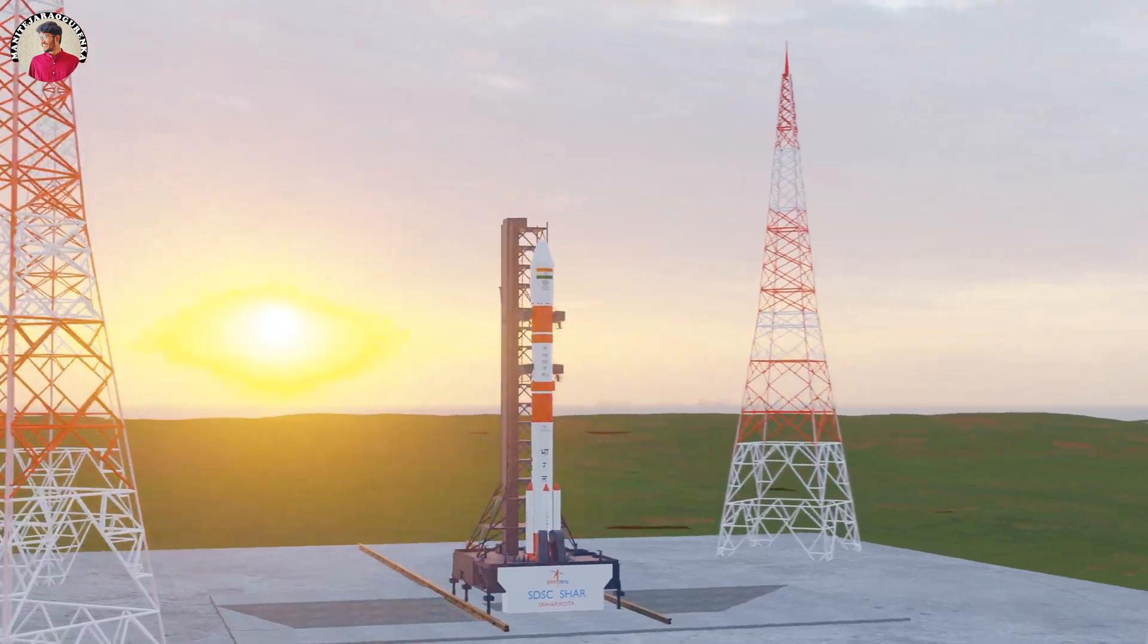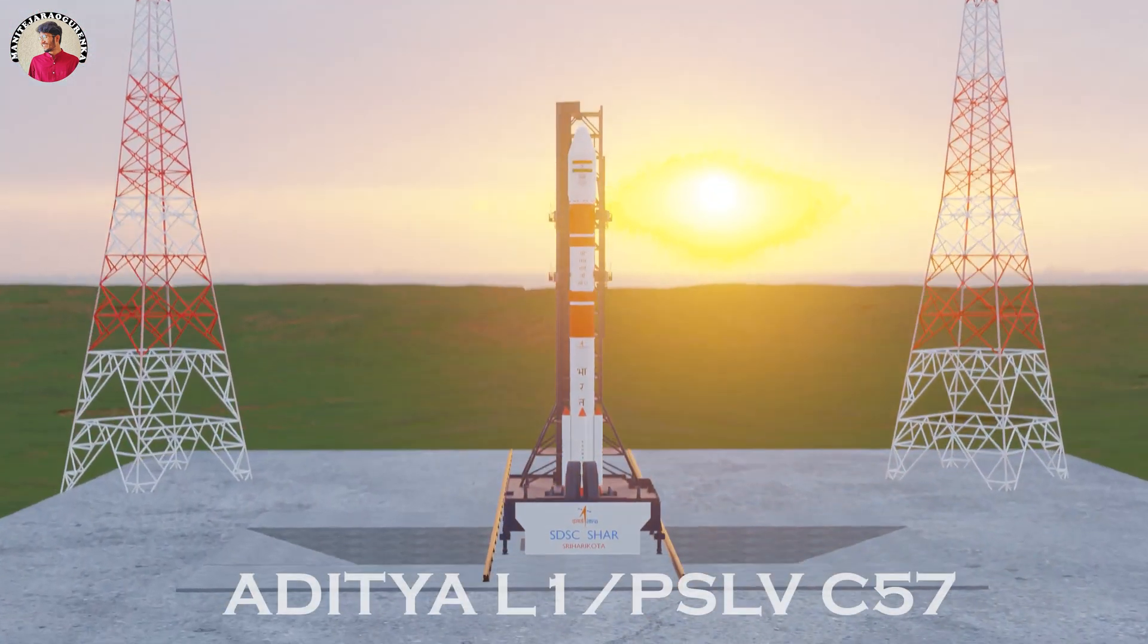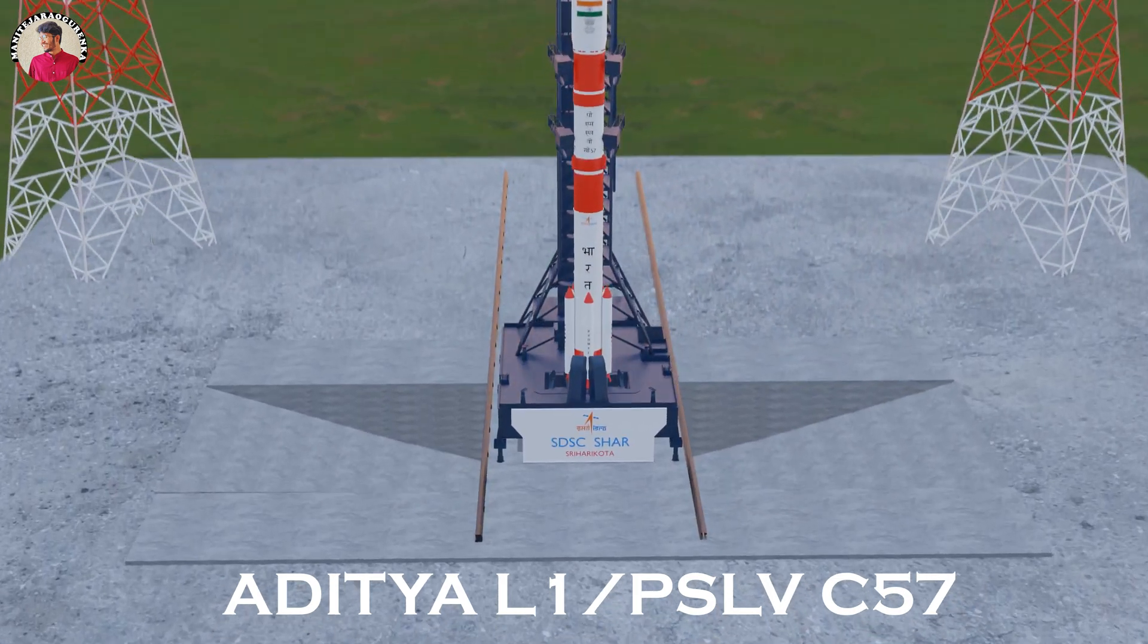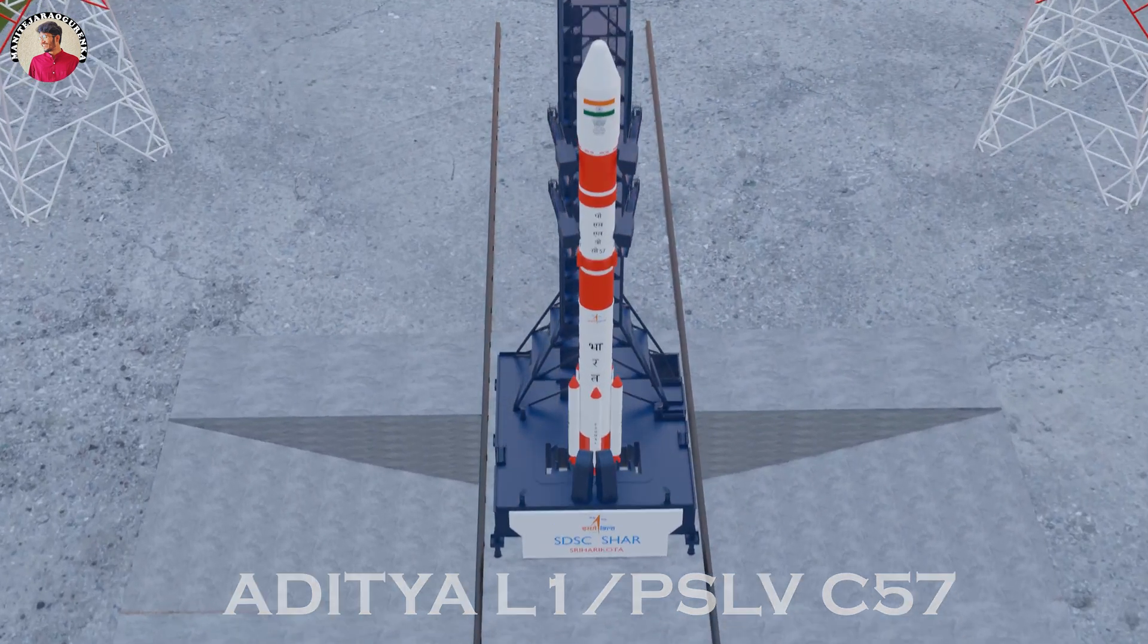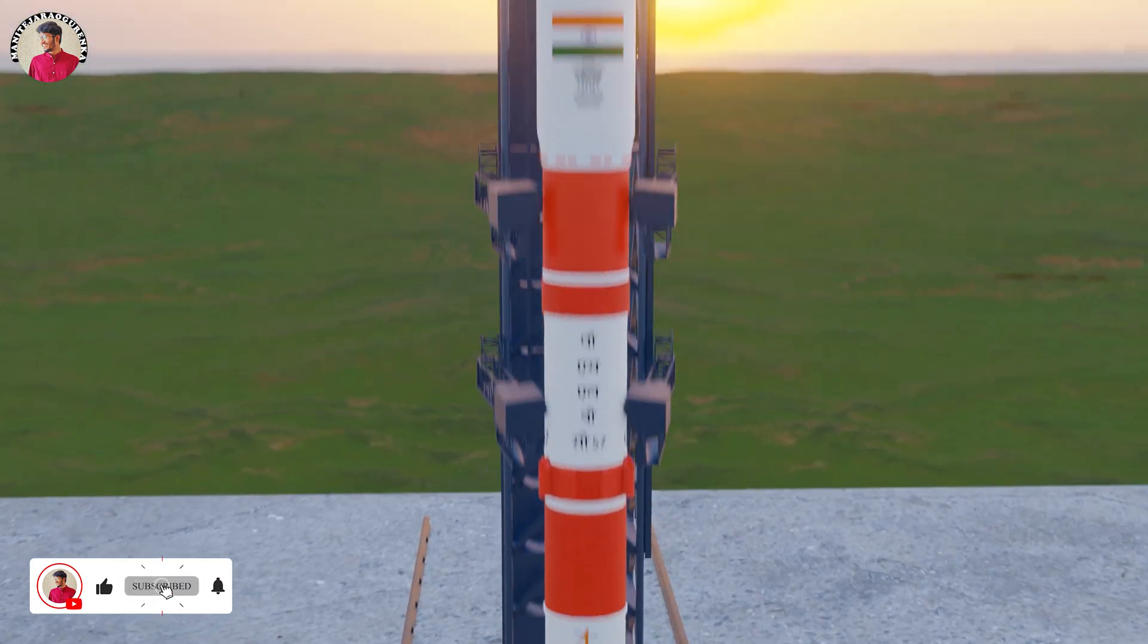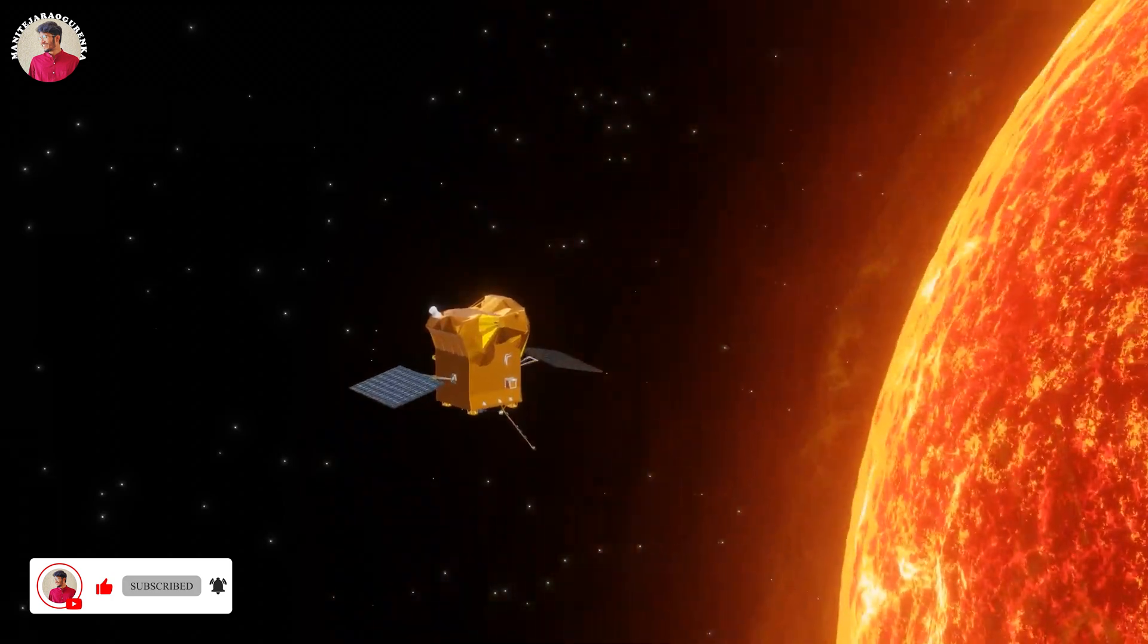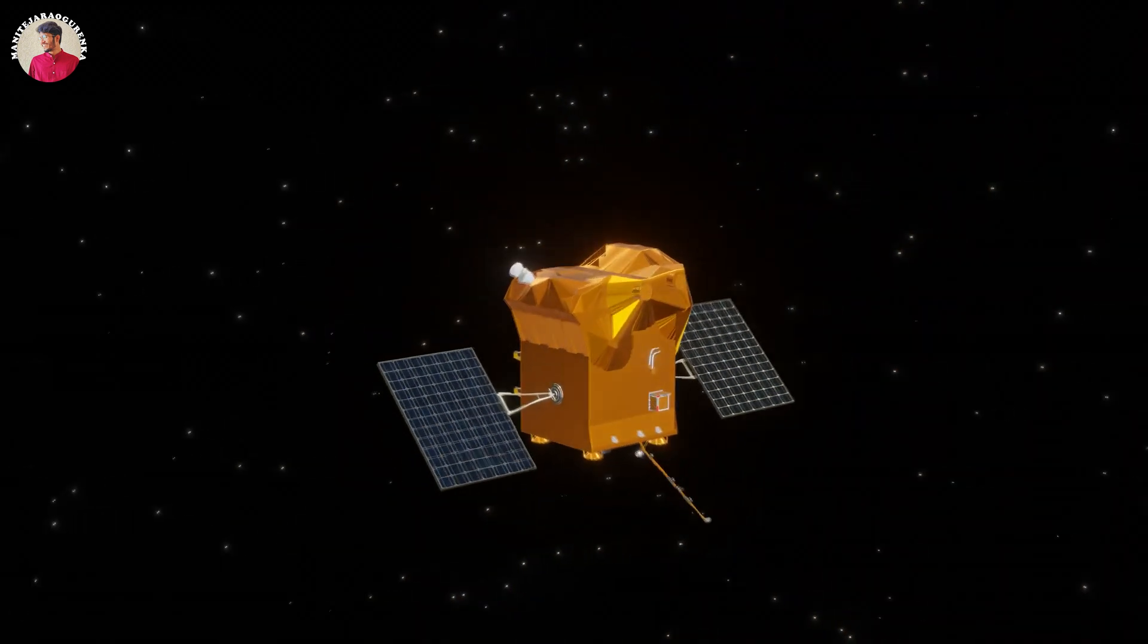After the successful Chandrayaan-3 mission to the moon, ISRO announced India's first solar mission, Aditya L1, to study the Sun, will be launched on September 2, 2023, from Satish Dhawan Space Center in Sriharikota. In this video, let's see how Aditya L1 will be launched and how it works.